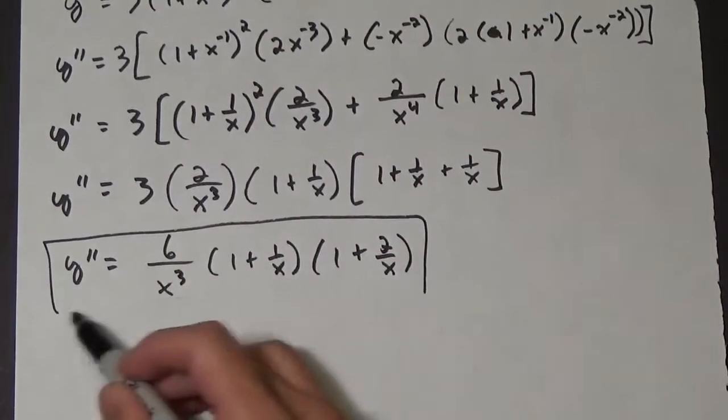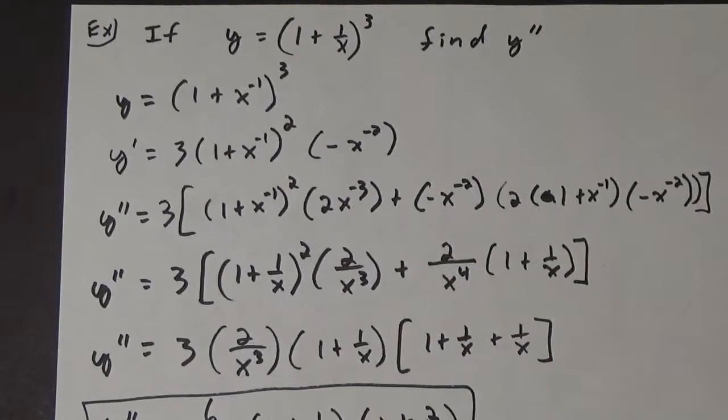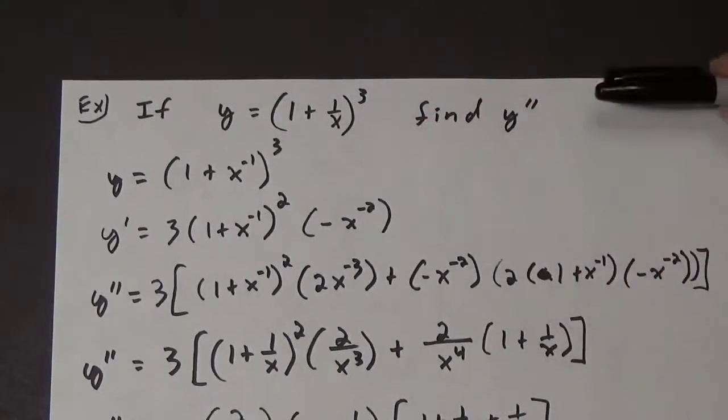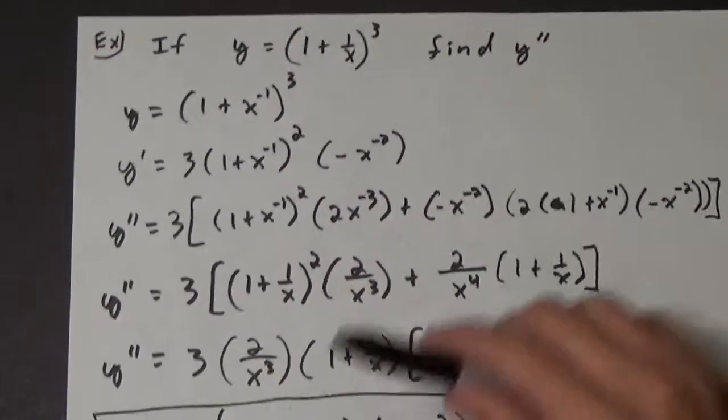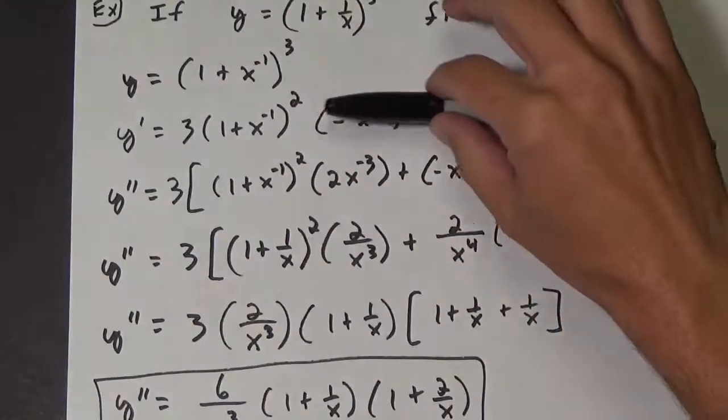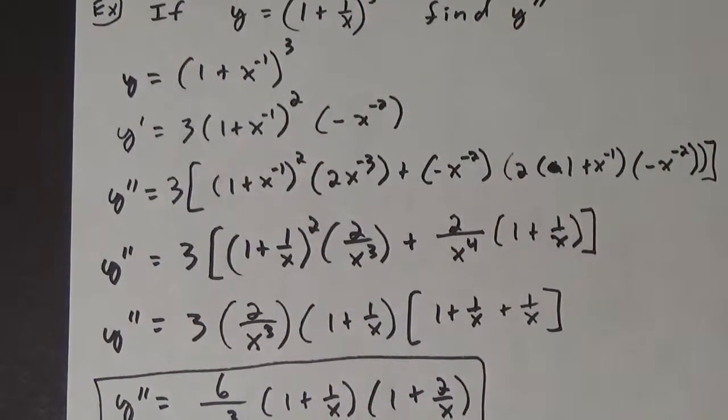Anyways, there's our second derivative cleaned up a little bit. But here's a good example of, you start with a function and you need to find the second derivative. And so we did find the first derivative. And then notice we didn't simplify at this point. We went ahead and just went straight to the second derivative and then did our simplification process.